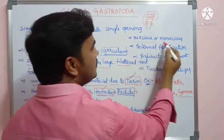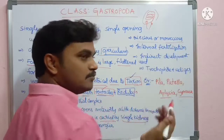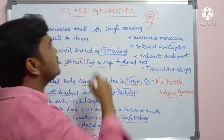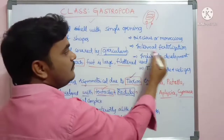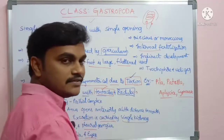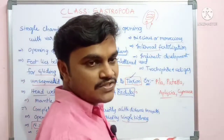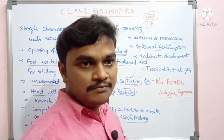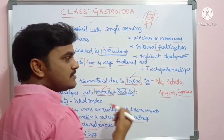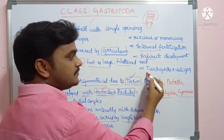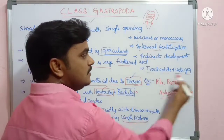Gastropods are either dioecious or monoecious — both conditions are present in Gastropoda. Internal fertilization occurs, meaning fertilization takes place within the body. Indirect development is present, meaning there are larval stages.